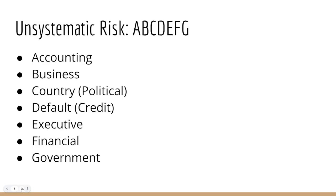Then you have your unsystematic risk, and I like to remember this based on A, B, C, D, E, F, G. A is for accounting risk, B is business risk, C is country or political risk, D is default or credit risk, E is executive risk, F is financial risk, and G is government risk.